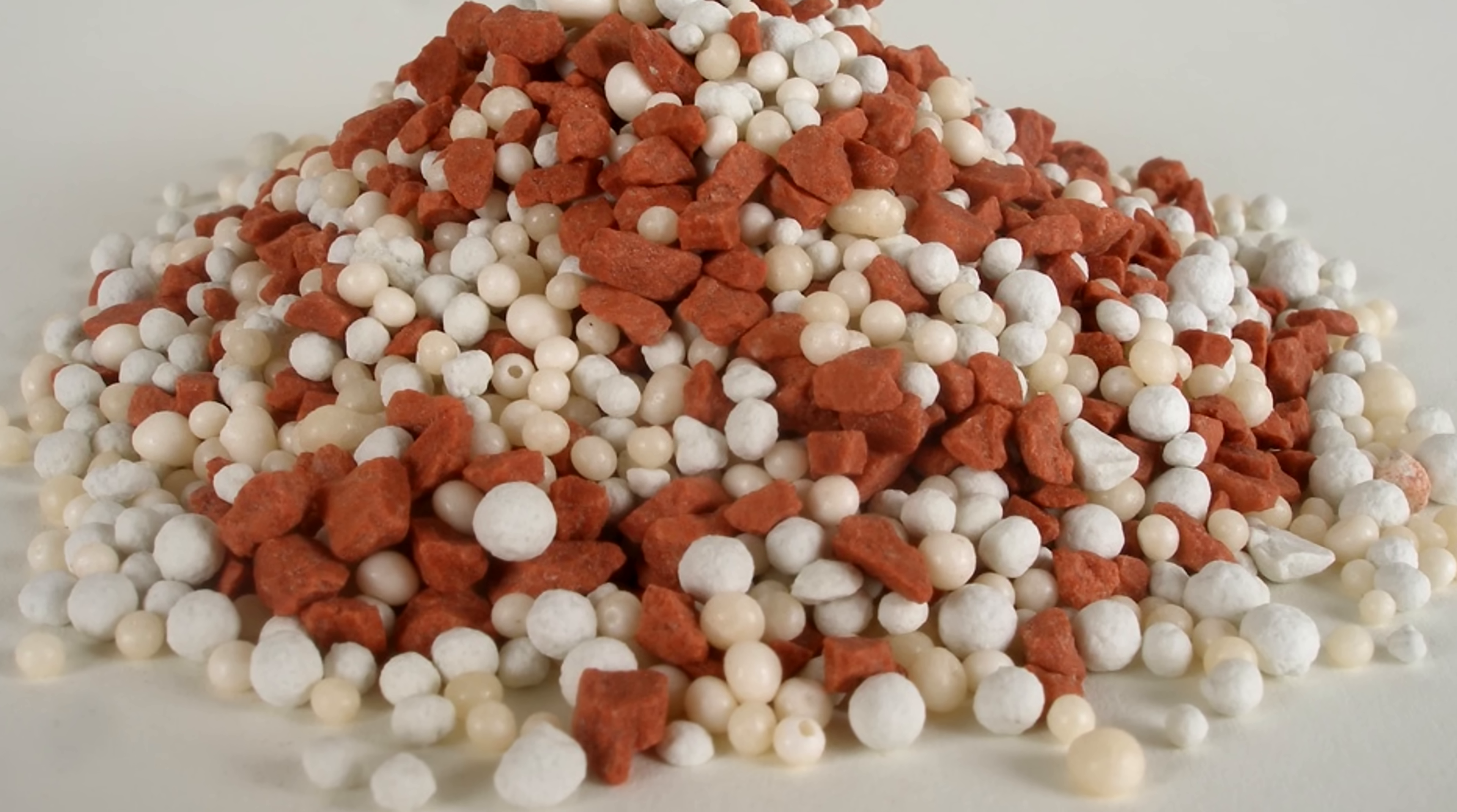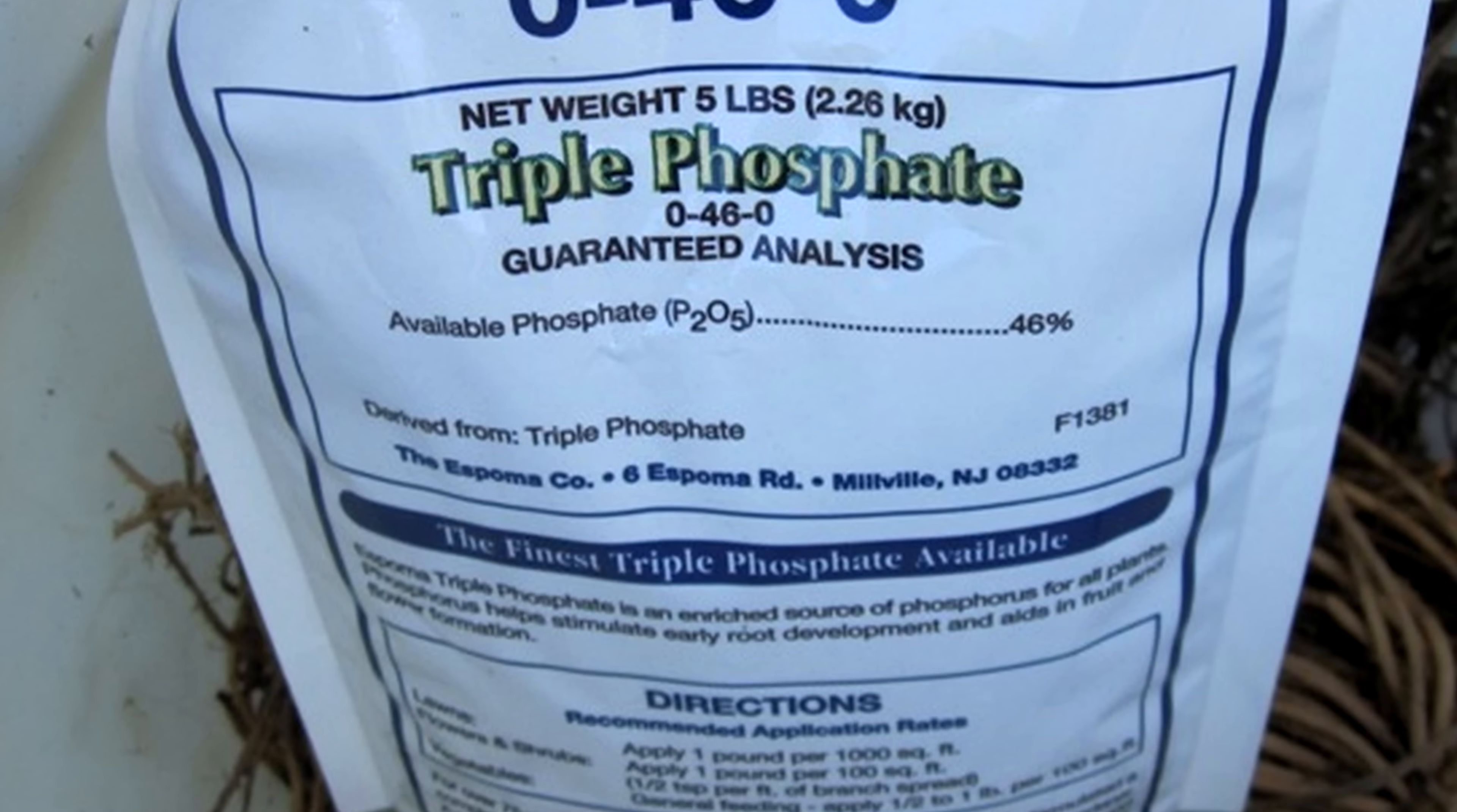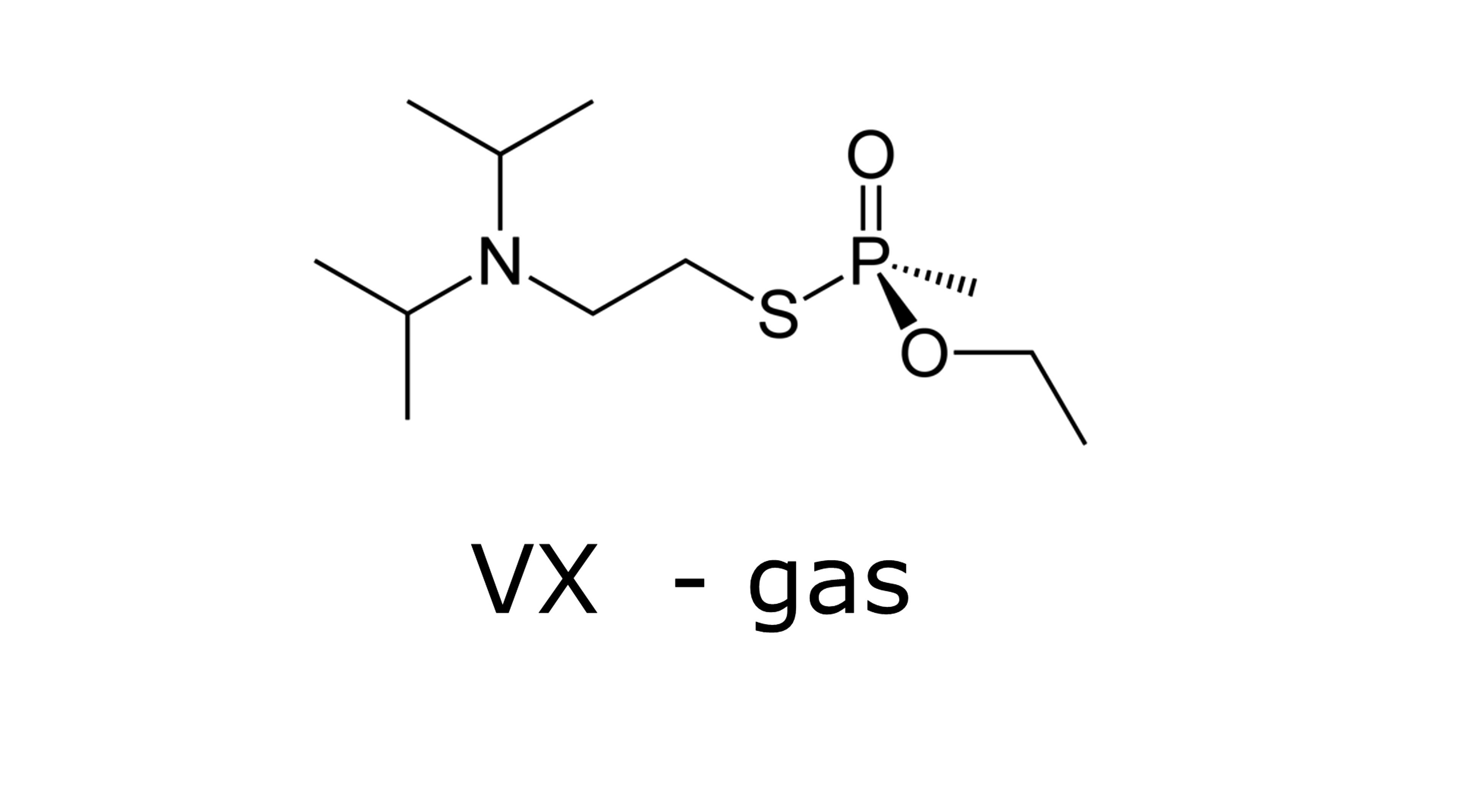Nowadays, phosphorus is used in agriculture as a fertilizer, for water softening, and for protection of metals from corrosion. Also, phosphorus is part of the most dangerous toxic nerve gas on the planet, the usage of which is prohibited.